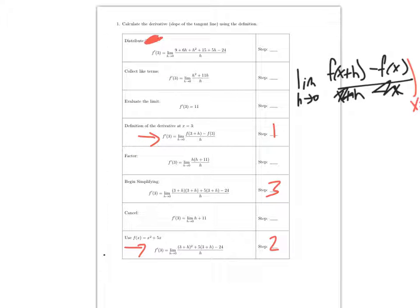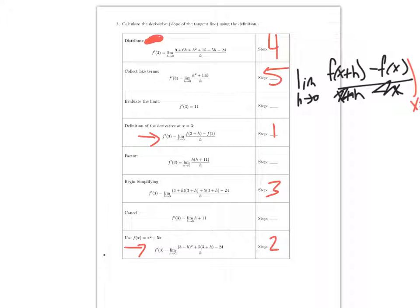Then we distribute — and there's a word used here that I would never use. So that's step 4. Once we are there, we're probably going to combine some stuff — in other words, collect like terms — so that's step 5. From there we factor an h out of the top, which is step 6. Then the h's cancel out — that's step 7. And finally, you're left with just 11 when you plug in 0 for h, so that's step 8.